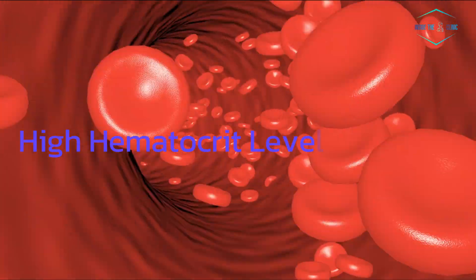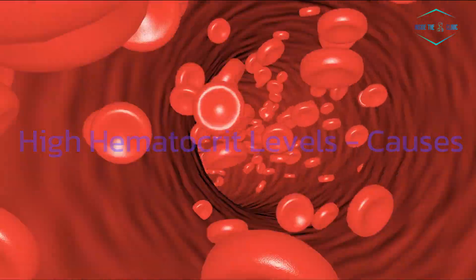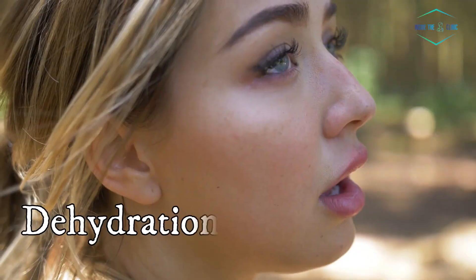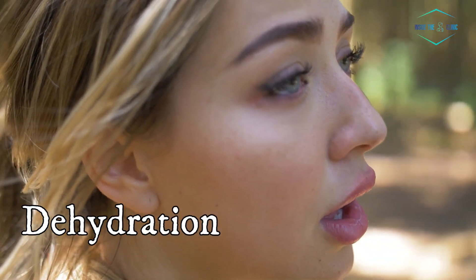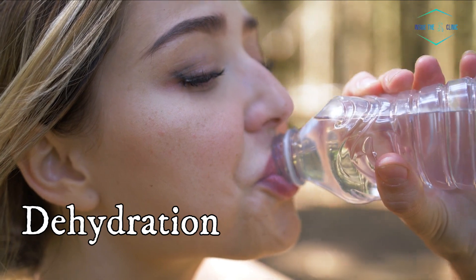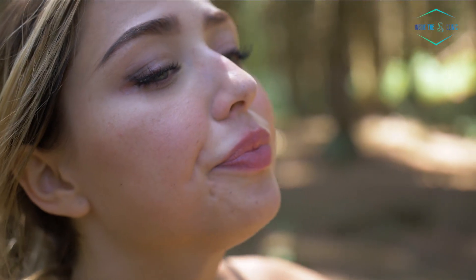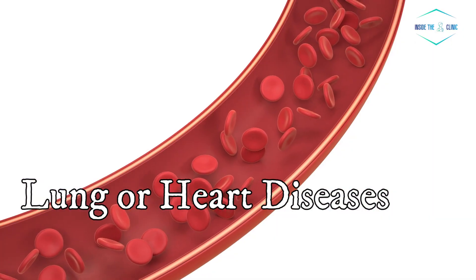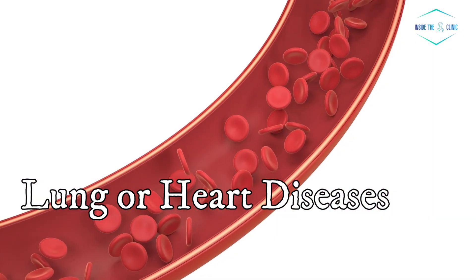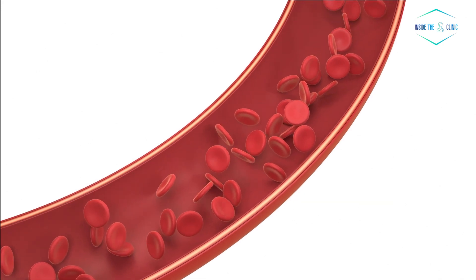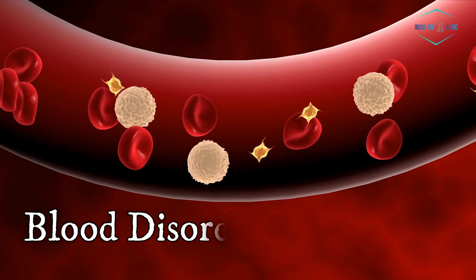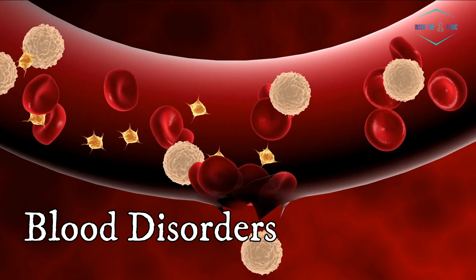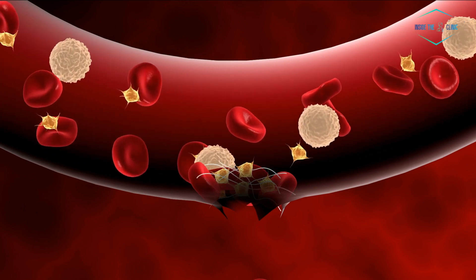An elevated hematocrit level, known as polycythemia, can have several causes, including dehydration. When you are not adequately hydrated, your blood can become more concentrated with red blood cells, leading to a higher hematocrit level. Certain lung or heart diseases can stimulate your body to produce more red blood cells, resulting in an increased hematocrit level. Blood disorders such as polycythemia vera, a rare blood disorder, can also cause an abnormal increase in red blood cell production.